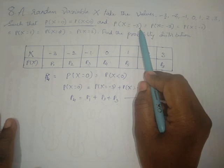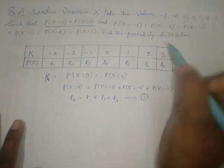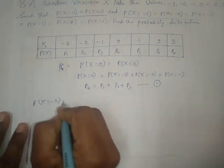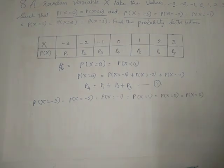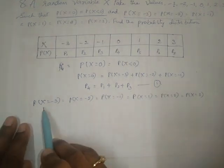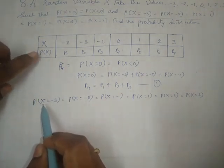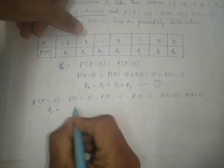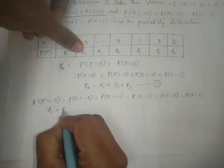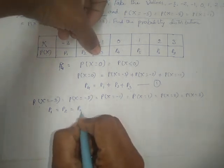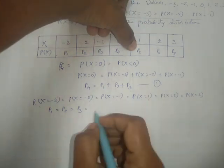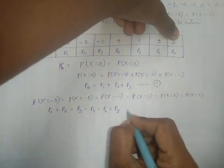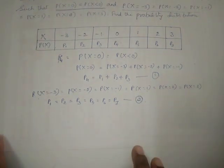The second hint is P(X=-3) equals P(X=-2) equals P(X=-1) equals P(X=1) equals P(X=2) equals P(X=3). Replacing with our naming conventions: p1 equals p2 equals p3 equals p5 equals p6 equals p7. All these six values are equal. This is our second equation.